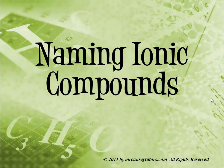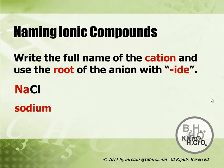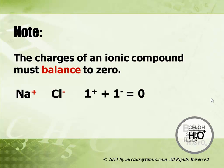Let's name some ionic compounds. In naming ionic compounds, write the full name of the cation, then use the root of the anion and add -IDE. For example, sodium and chlorine come together to make sodium — that's the cation — chloride. The charges of an ionic compound must balance to zero. Notice sodium has a plus one and chlorine has a negative one; plus one and negative one equals zero, so they balance perfectly.